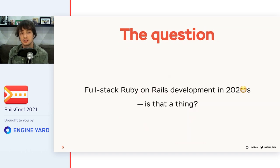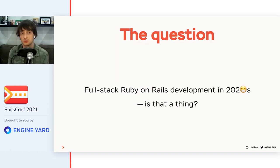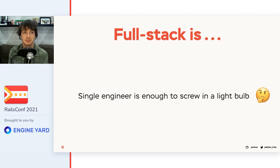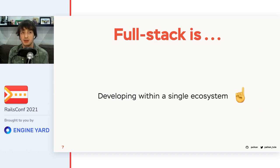So today I'd like to raise and try to answer the following question: could Rails full-stack development be a thing in the 2020s? Let's start with another question — what is full stack, by the way? One definition is that there is a single person who can do everything, but I doubt that's a correct definition. Instead, I'd like to say that full-stack development is when you develop within a single ecosystem, and in our case that ecosystem is Rails.